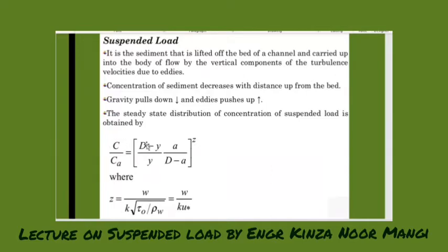So this is how we will find the unknown concentration. Then we have this constant Z which equals W upon K under root tau knot upon rho W. Now this W is basically the fall velocity and this K is the von Karman's constant.